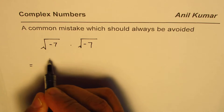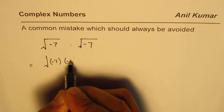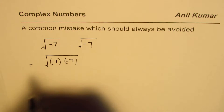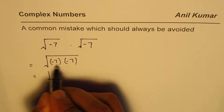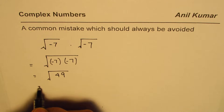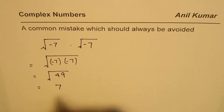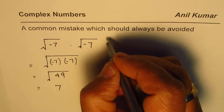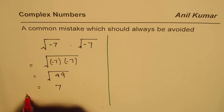What you may do is just multiply these two numbers and say this could be the product of minus 7 times minus 7 within the square root. This equals plus 49, and therefore you may get the answer square root of 49, which is 7. That is the solution you might get — now the question is: find the mistake.